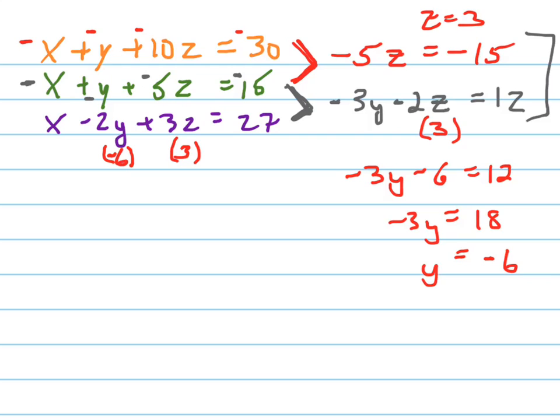So my y is negative 6. I'm going to plug it in there, and so I'm going to rewrite this purple equation. Plus 12 plus 9 equals 27. So that's 21 equals 27. x plus 21 equals 27, which means x equals positive 6.